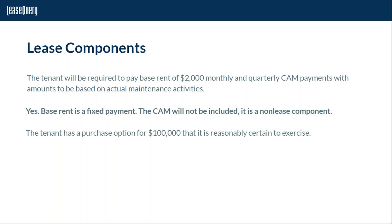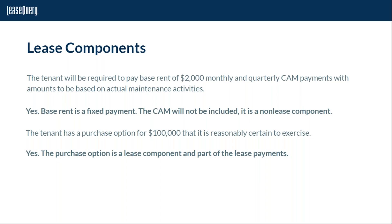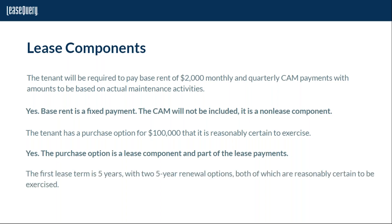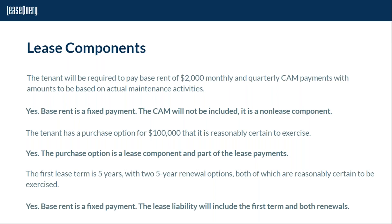The tenant has a purchase option for $100,000 that it is reasonably certain to exercise. The purchase option is a lease component and part of the lease payments. The first lease term is five years and there are two five-year renewal options. The tenant is reasonably certain to exercise these, so the base rent across the renewals and the first term are all included in the initial lease liability calculation.